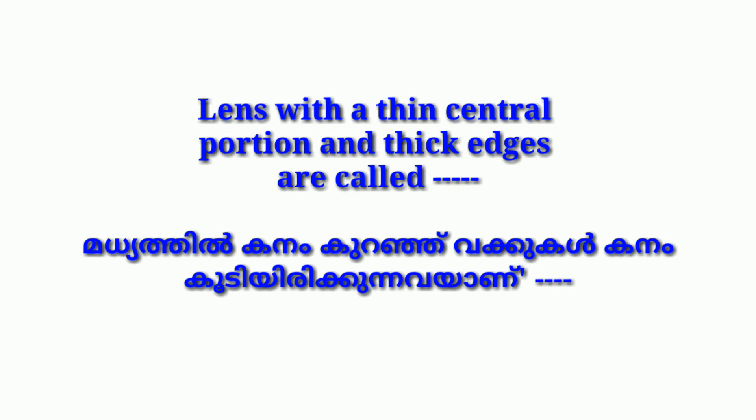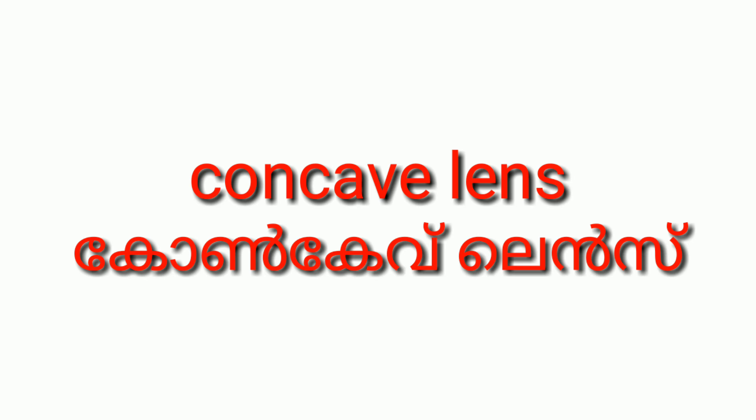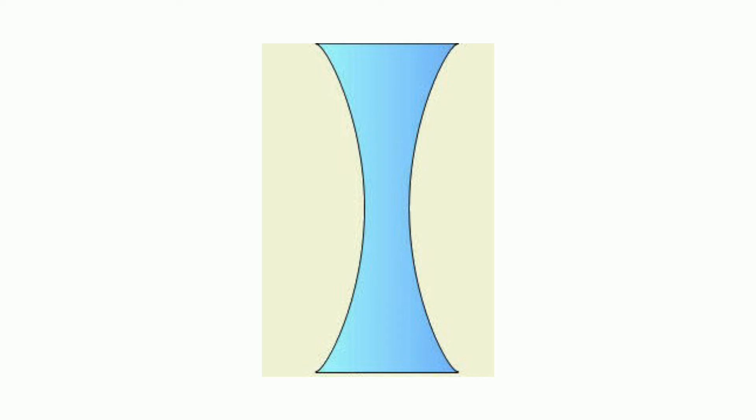Lens with a thin center portion and thick edges are called — maddiyathil kanan kooediyatum, bokkukul kanan kooediyatumaya lens — concave lens. Lens with a thin center portion and thick edges are called concave lens.